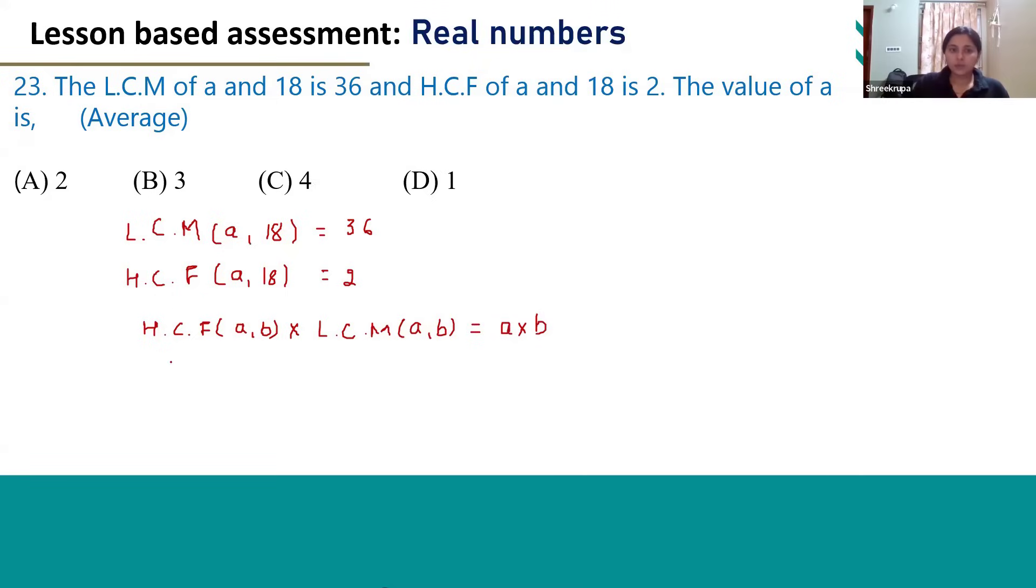We have to use this formula to find out the value of A. We know the value of HCF of A and 18 that is B. HCF of A and 18 is 2 and LCM of A and 18 is 36. Also, we know the value of B that is 18.